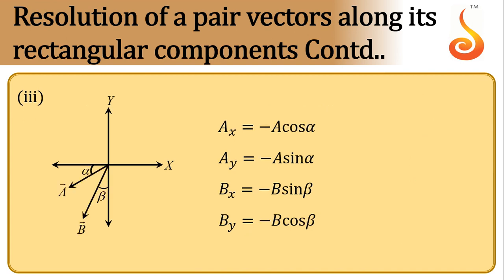What if we take them in the third quadrant? This is A, and with the x-axis, A subtends an angle alpha. So its x component is negative and y component is also negative. Both x and y components are negative: Ax is equal to minus A cos alpha, Ay is equal to minus A sin alpha.